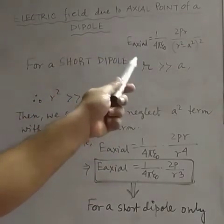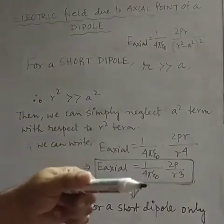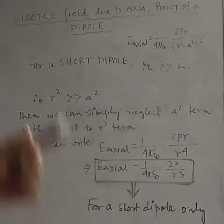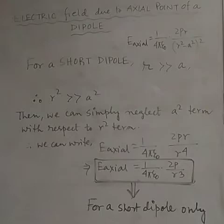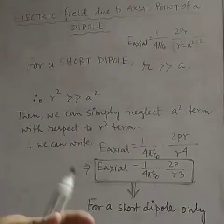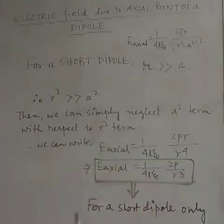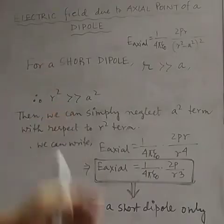That expression applies when the dipole is not a short dipole — meaning the length of the dipole is finite. Now for a short dipole, the length between the two ends is very short, for example 0.1 meter or 0.2 meter.